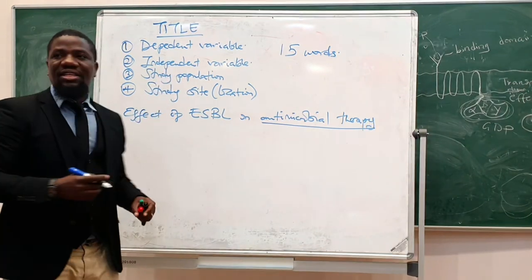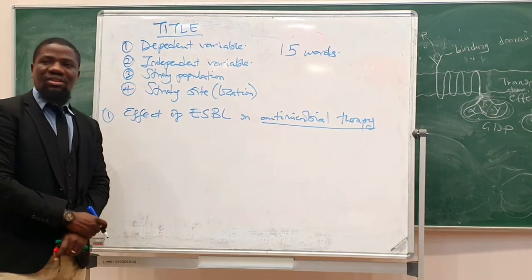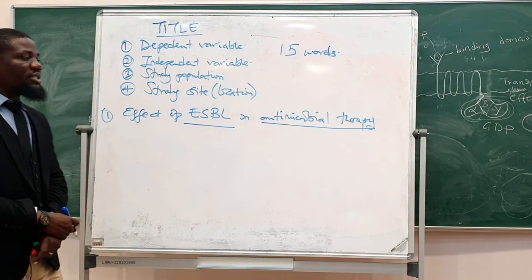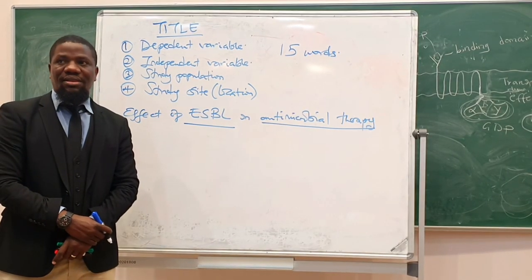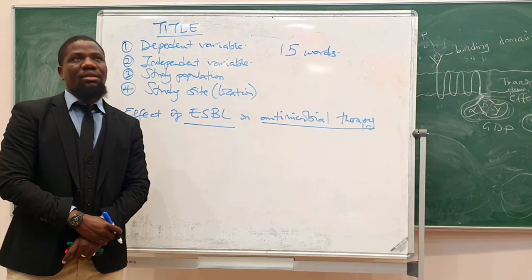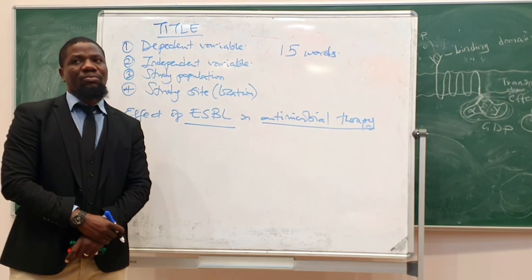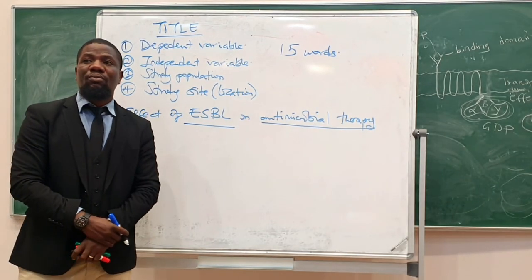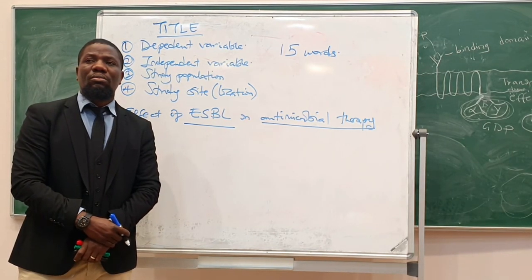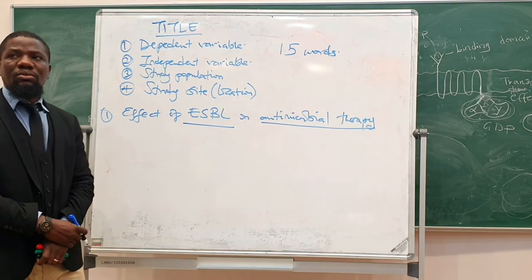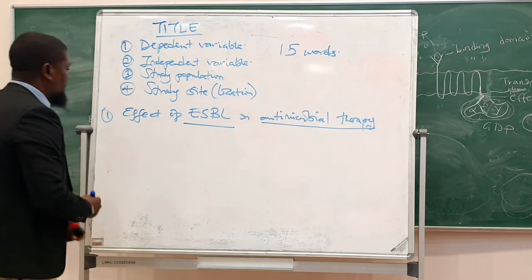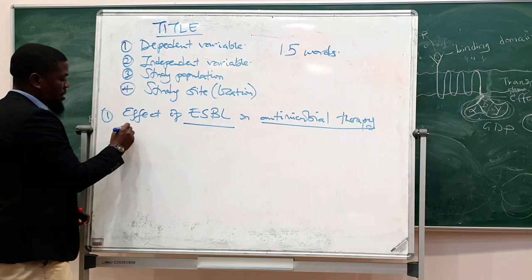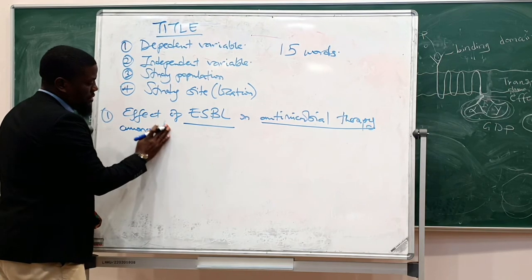Okay, so at least we have the dependent variable. What about the independent variable here? Study population? We don't have. We don't have to go to the end of this particular organization. So you take these organizations, for example, around the new cities especially. For example, you use those same organizations that are other professions. So which organisms are we talking about? Klebsiella and E. coli, yes. Okay, Klebsiella. So effect of ESBL on antimicrobial therapy among the Klebsiella, among E. coli and E. coli.